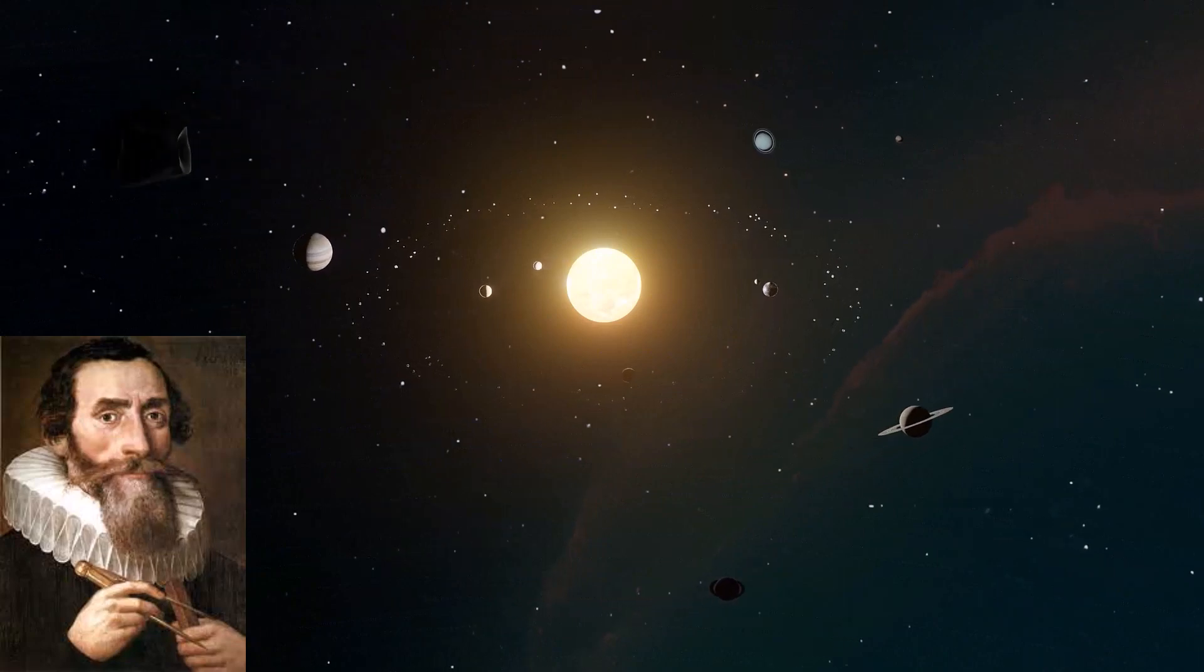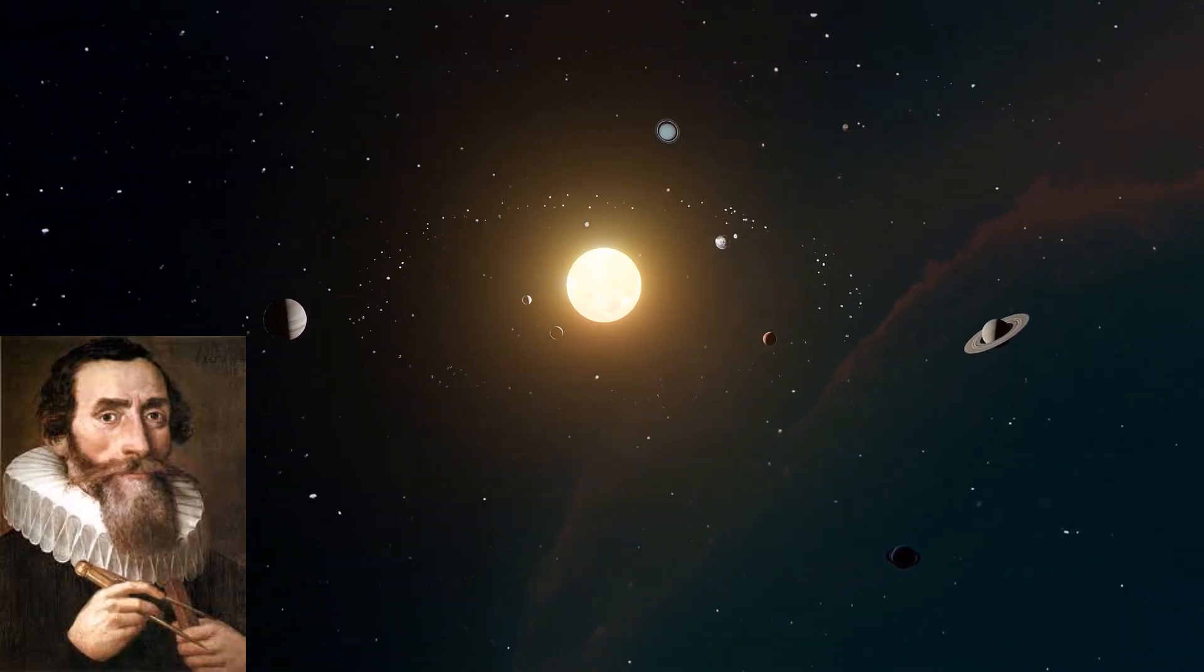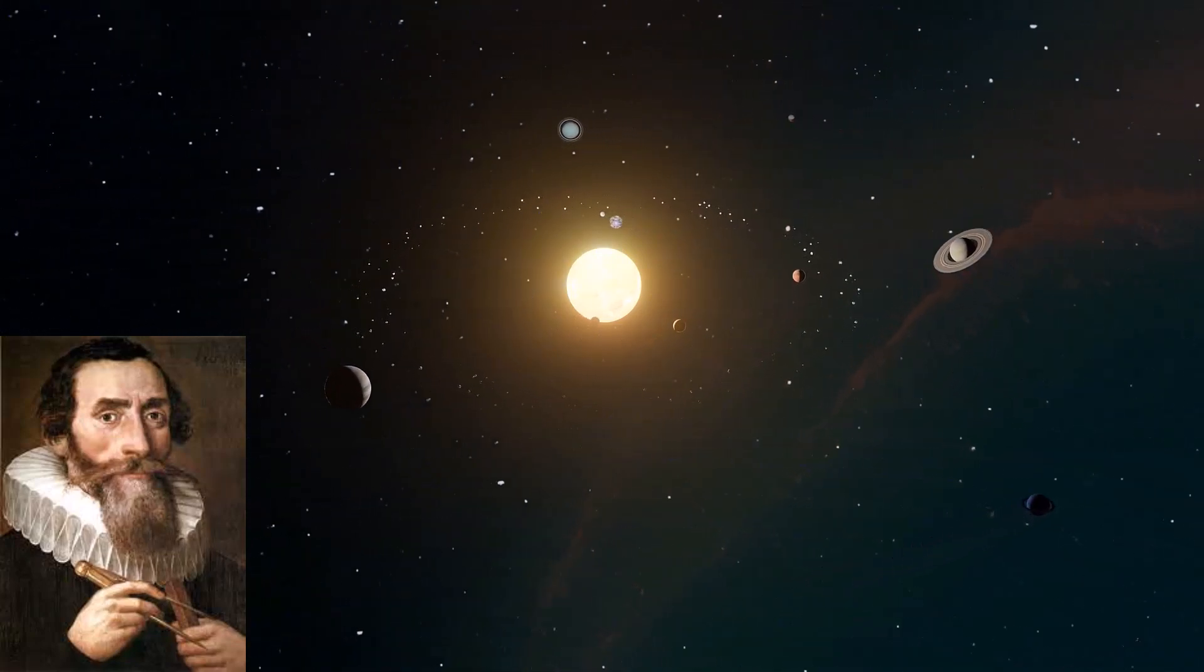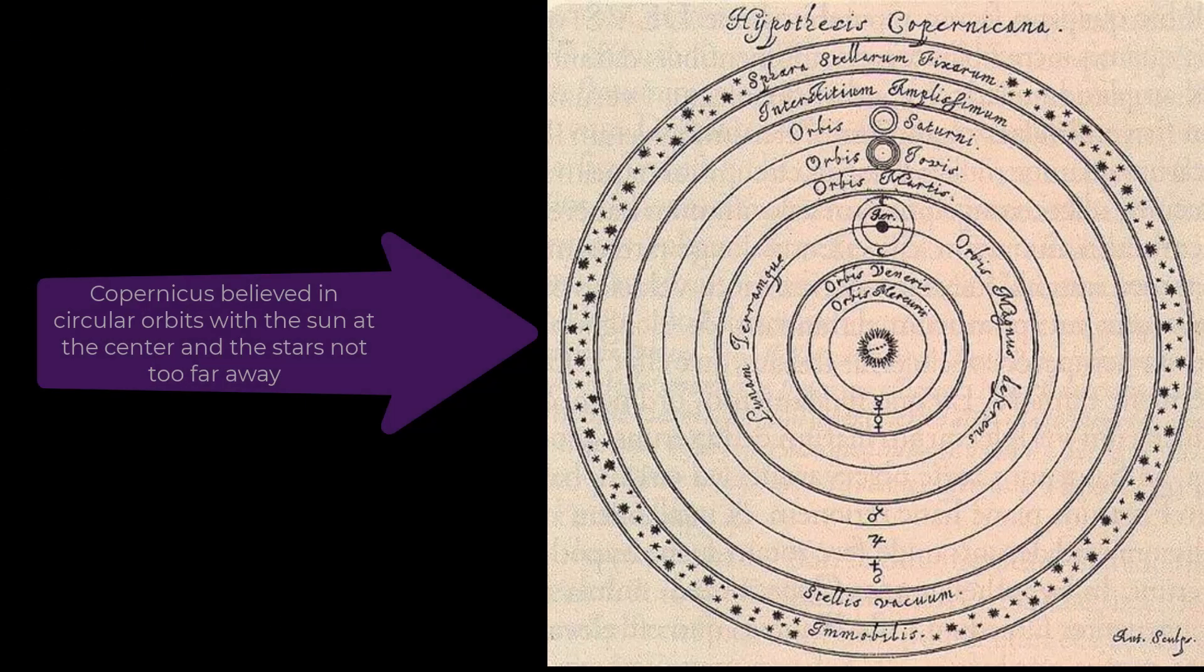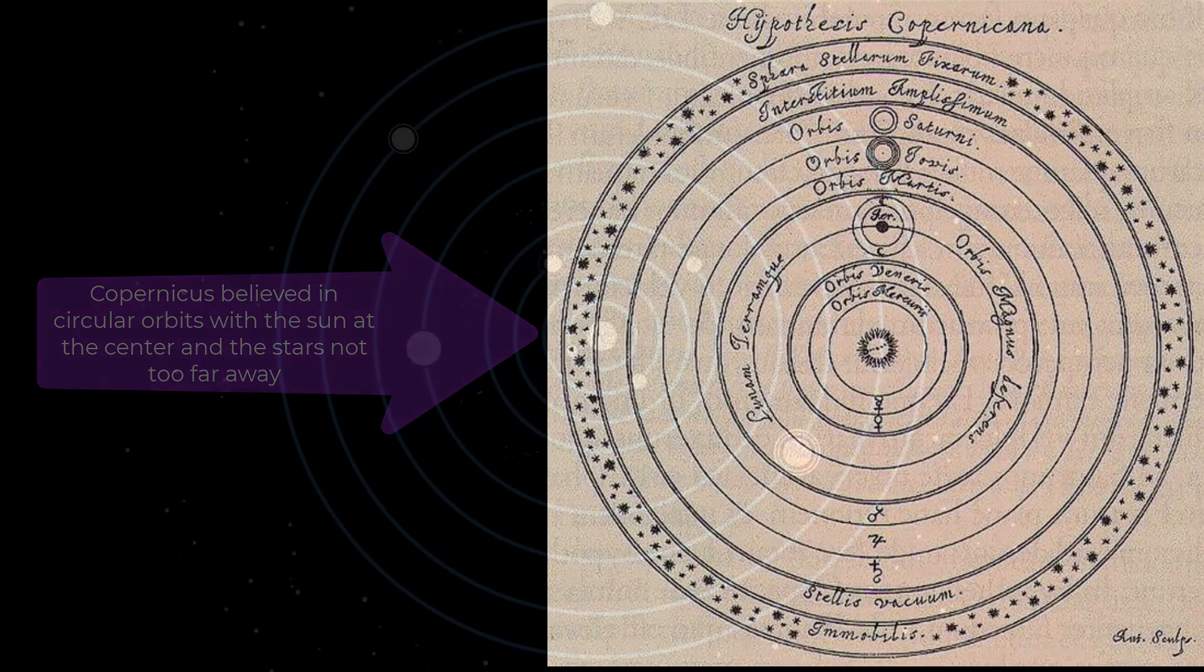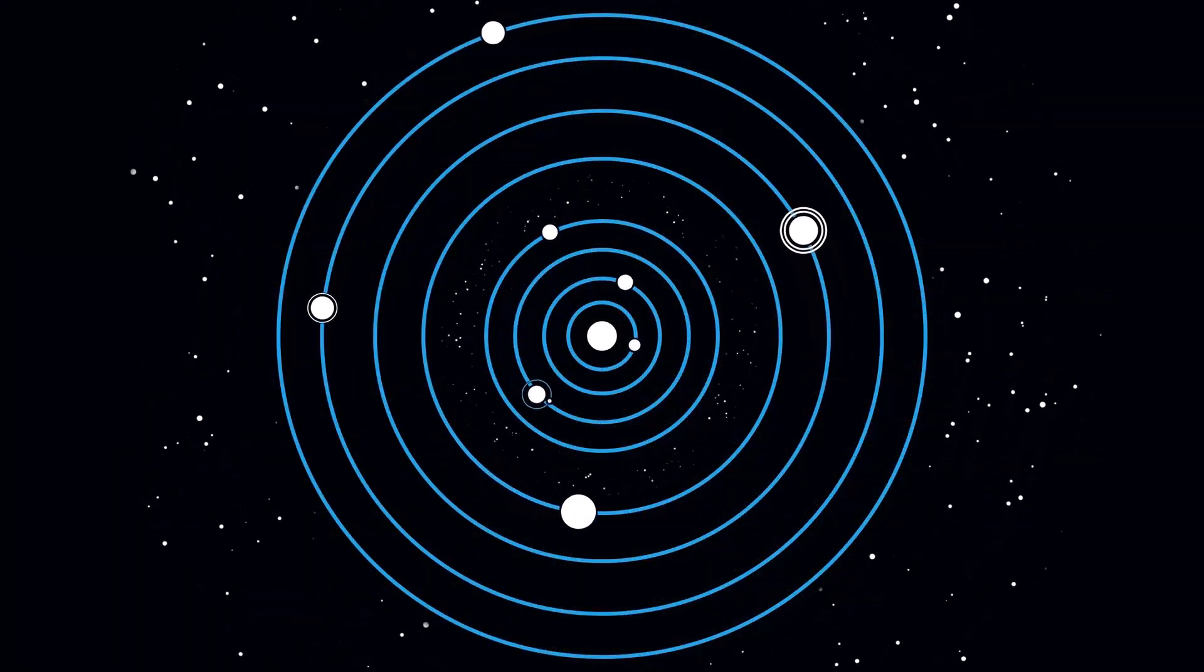Kepler had also developed his three laws at this time which were remarkable and are still used today. They lead on from Copernicus and his model by suggesting elliptical orbits of planets around the sun instead of circular, which fixes the need for random epicycles in orbits. Brilliant.